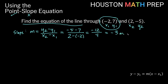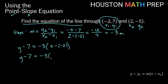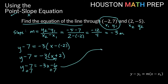Let's go ahead and use this point, so our m is going to be negative 3 in this case. y minus y1 would be y minus 7, equal to m which is negative 3, times x minus x1, which is x minus negative 2 in this case — that's like x plus 2. So y minus 7 is equal to negative 3 times x plus 2. We'll distribute the negative 3: that gives us y minus 7 is equal to negative 3x minus 6. Now we add 7 to both sides to get y by itself, so we get y equals negative 3x, and negative 6 plus 7 gives us plus 1.